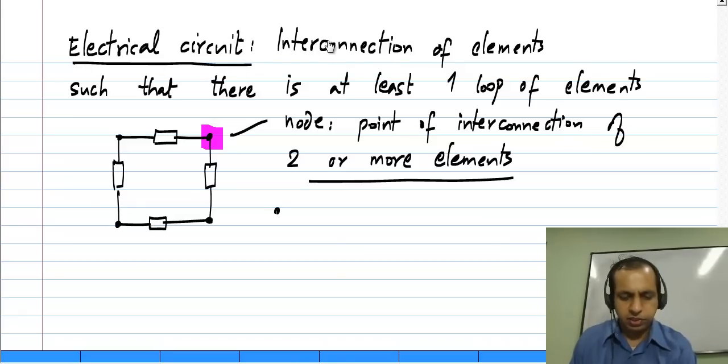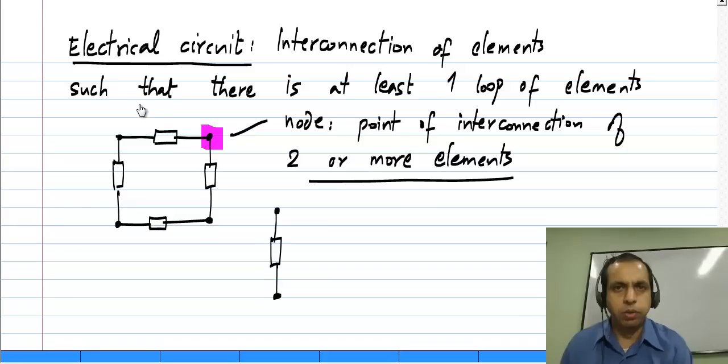That is, if we have a circuit such as this, let me take say just a single element. There is no loop, we will quickly see that the current in this will be zero. So it is not interesting at all, and it is not just a single element,